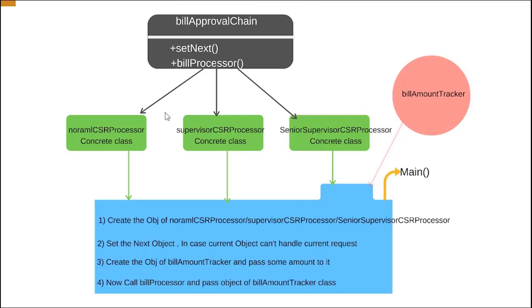Here is how I am going to write the program. First I will write one interface called BillApprovalChain with two pure virtual functions: SetNext and BillProcessor. SetNext sets the next object in case the current object cannot handle the request, and BillProcessor actually approves the bill.